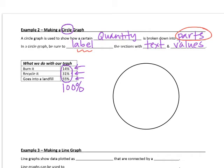And you want to make sure that you label the sections with text, that's words, as well as values. So I don't want to just see the words burn it, but I also want to see the value 14%. So if we did a survey or got some information from the internet and put a title here, what we do with trash.